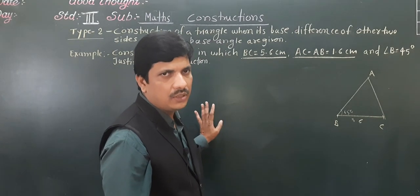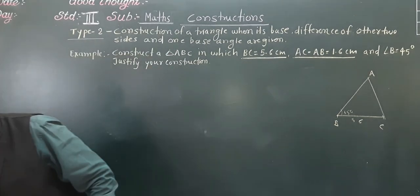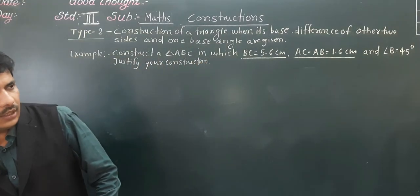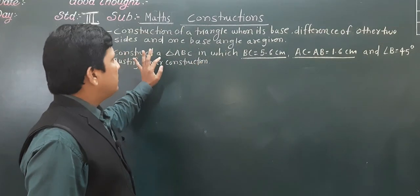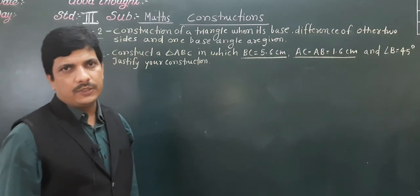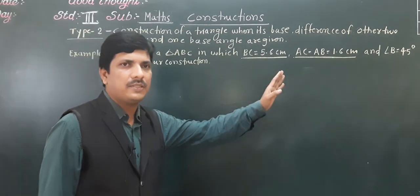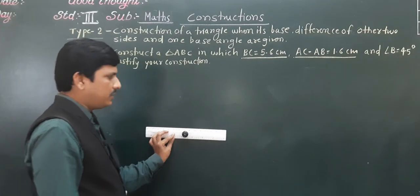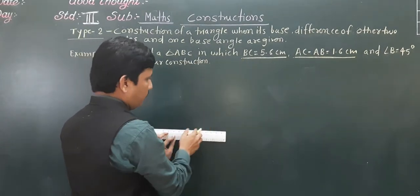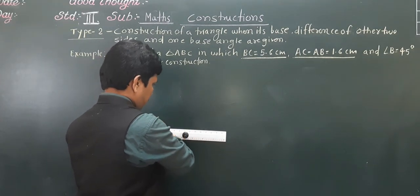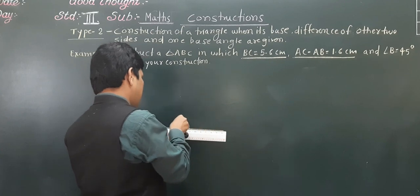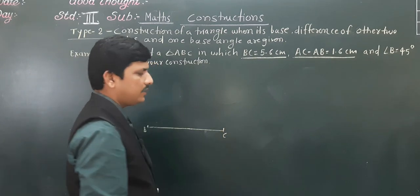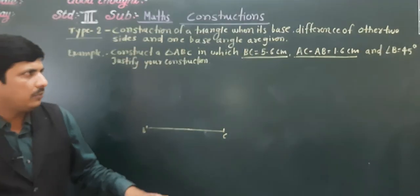Now we will start the actual construction. Most of the steps are the same. First, construct BC of given length. BC is 5.6 centimeter — I am taking the base BC. This point we will call B and this point we will call C. BC is 5.6 centimeter.